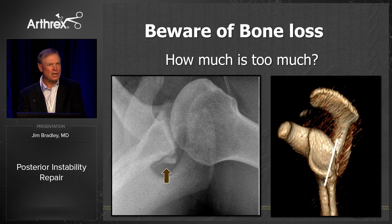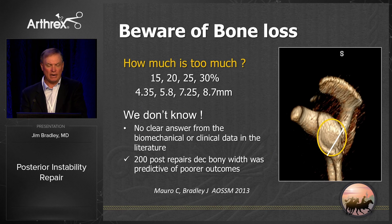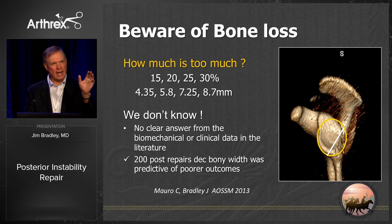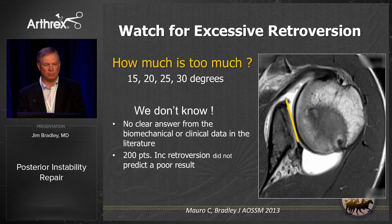Beware of bone loss. The question is how much is too much. Anteriorly we know about 25%, but posteriorly we really don't know — 25% is only 7.25 millimeters. There's no clear answer from biomechanical or clinical data in the literature. Looking at our 200 posterior repairs, decreased bony width was predictive of a poor result, but it had nothing to do with a specific number of glenoid loss. It was a narrower glenoid that had a higher risk of failure, not a specific percentage.